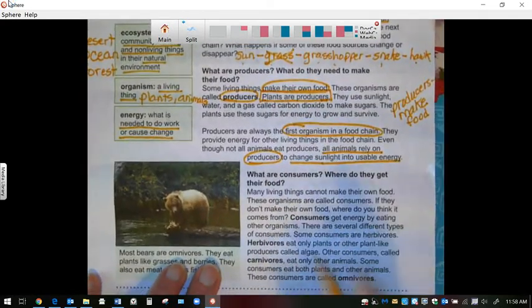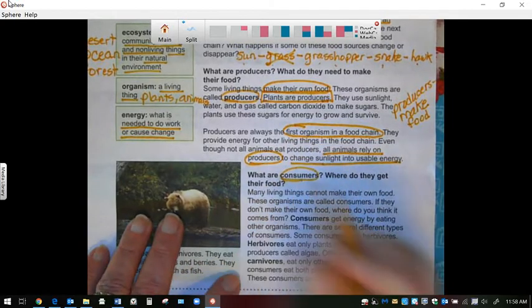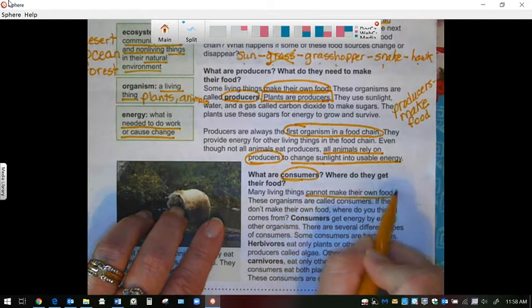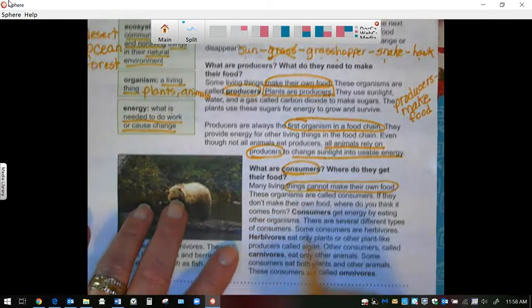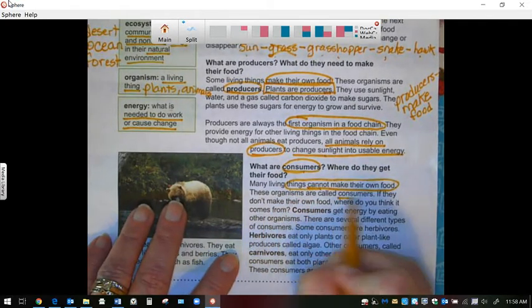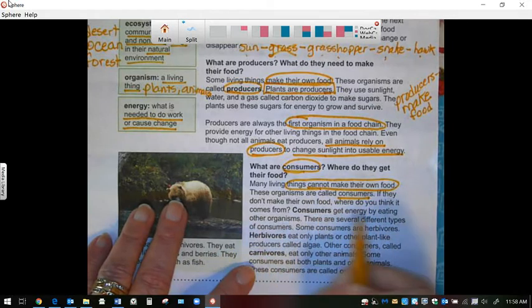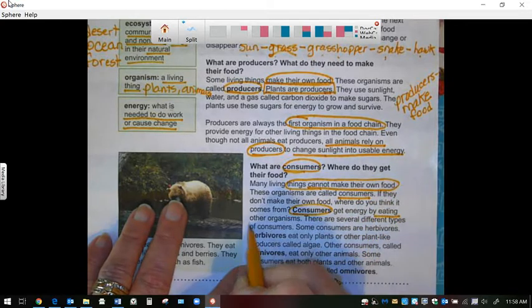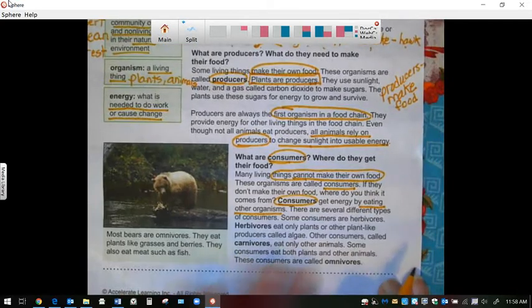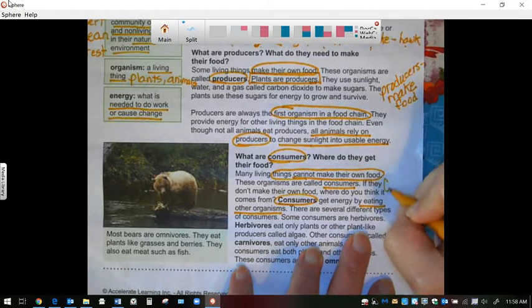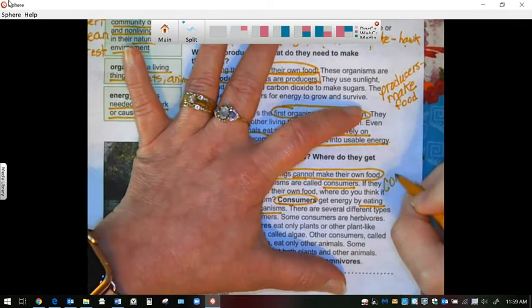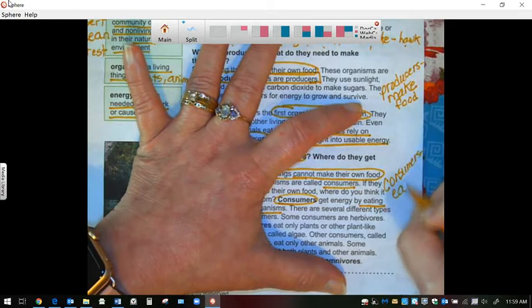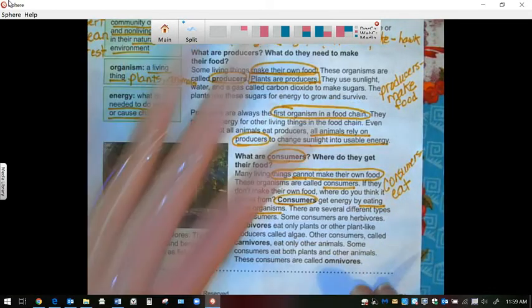So what are consumers? Many living things, they cannot make their own food. These organisms, they're called consumers. If they don't make their food, where do they get it from? Consumers get energy by eating other organisms. So here on the side, we're going to take a note. Producers make and consumers eat.